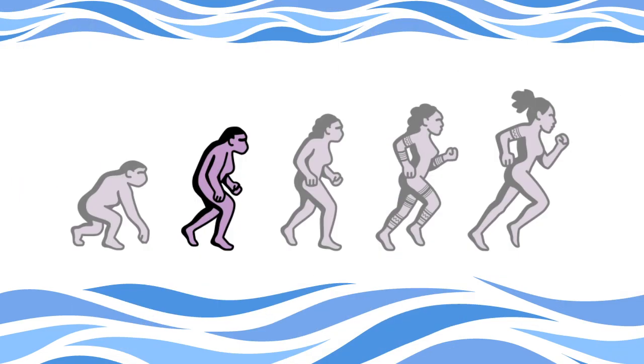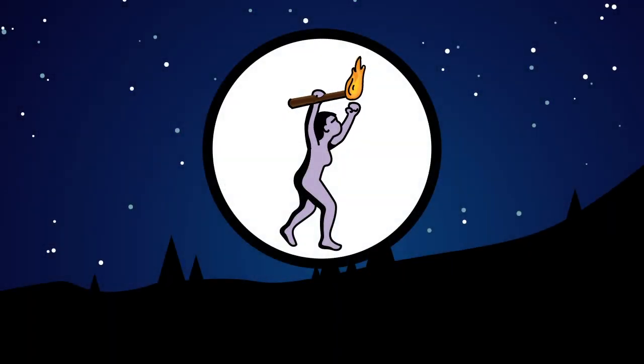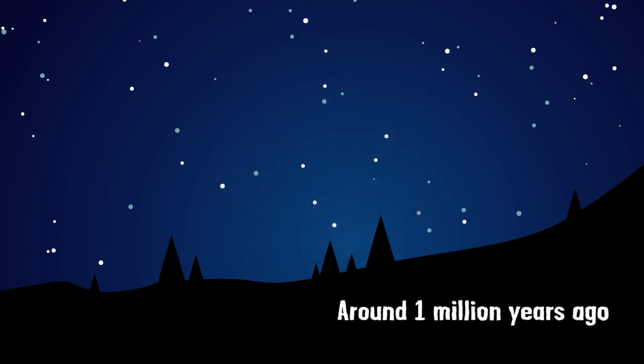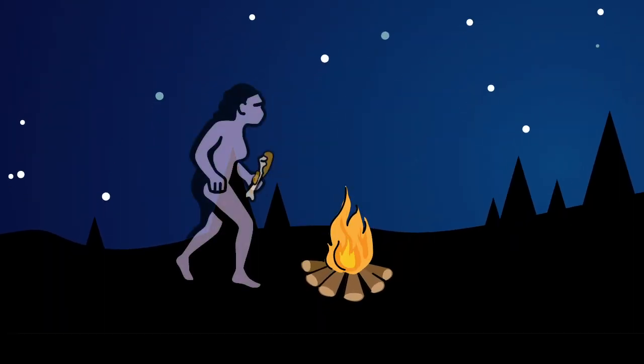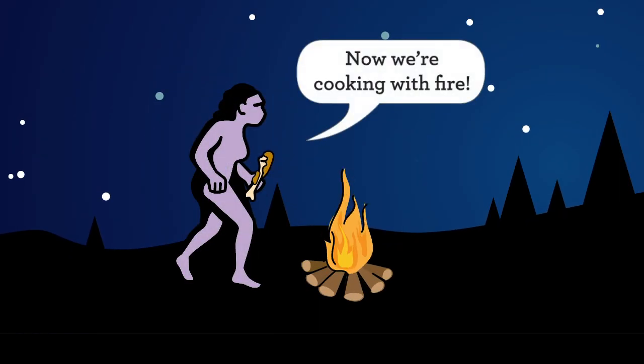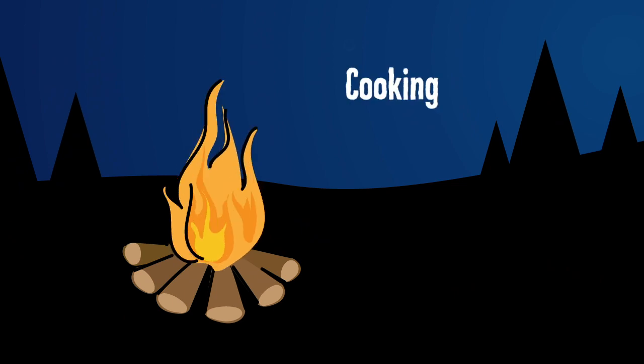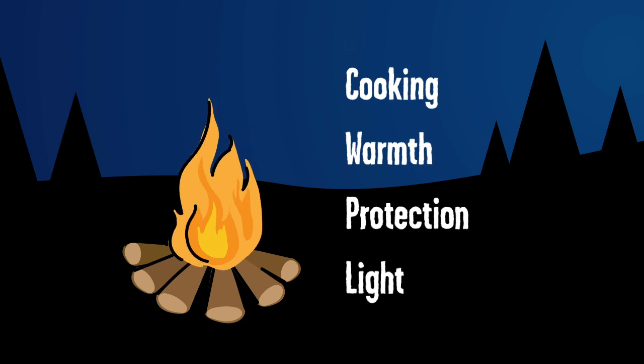The next step involved more changes to our physical anatomy, and then we discovered a major new source of power. Around one million years ago, our ancestors learned how to use fire. Now we're cooking with fire. In addition to cooking, fire also brought us warmth, protection, and light in the darkness.